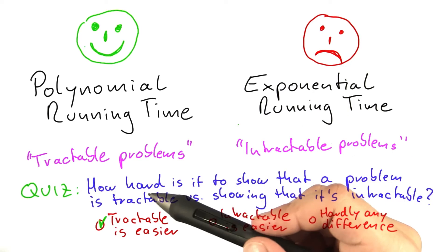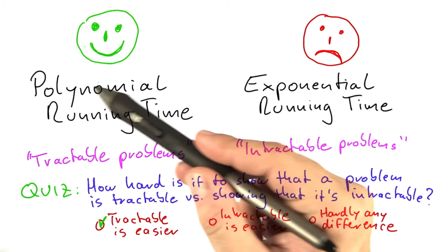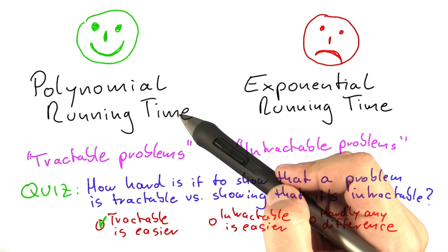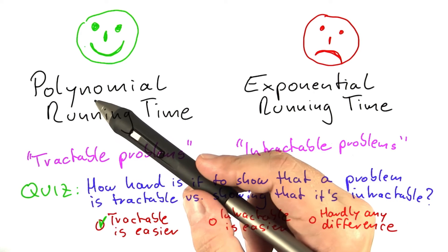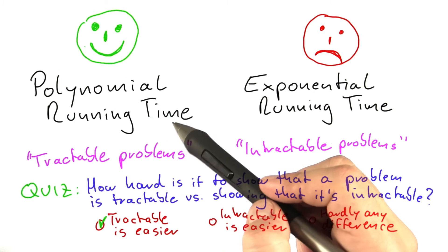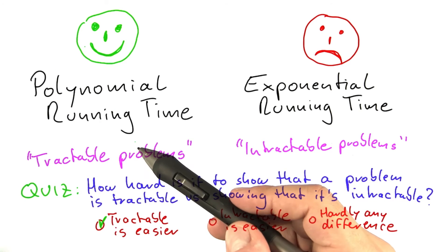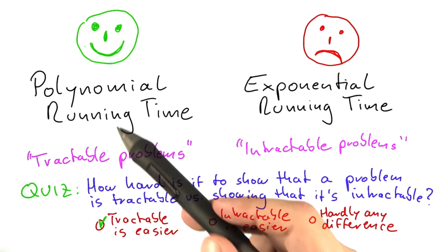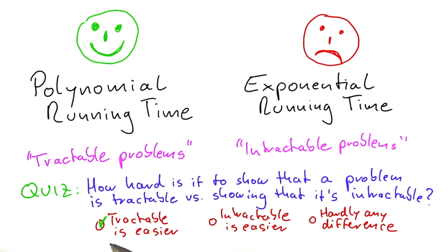And the reason for that is if you want to show that a problem has a polynomial time algorithm, then all you need to do is come up with that algorithm. Now that might be very hard, but nevertheless, once you have found a single algorithm for a problem that has polynomial running time, then you're done. You have shown that this problem is tractable.